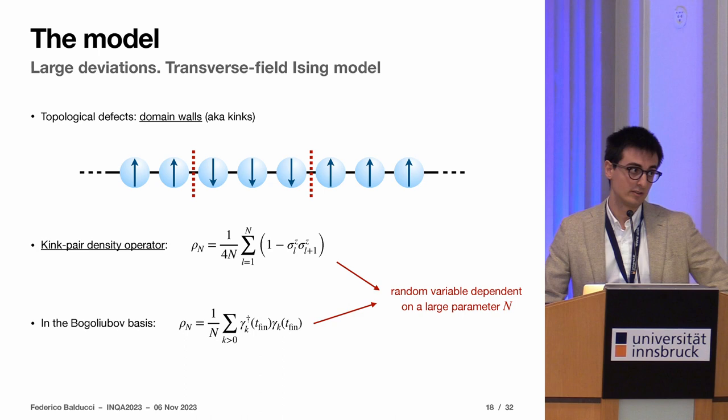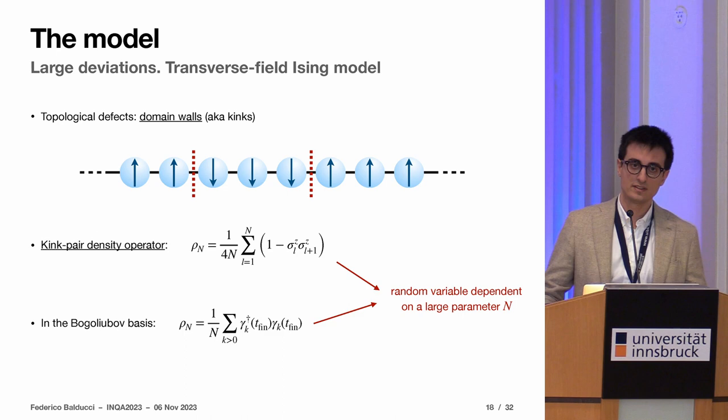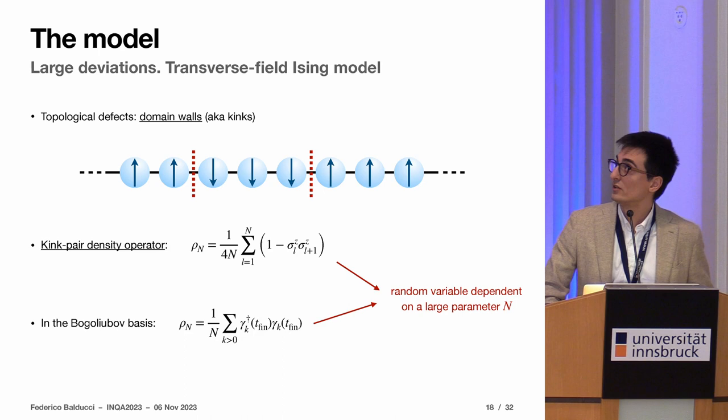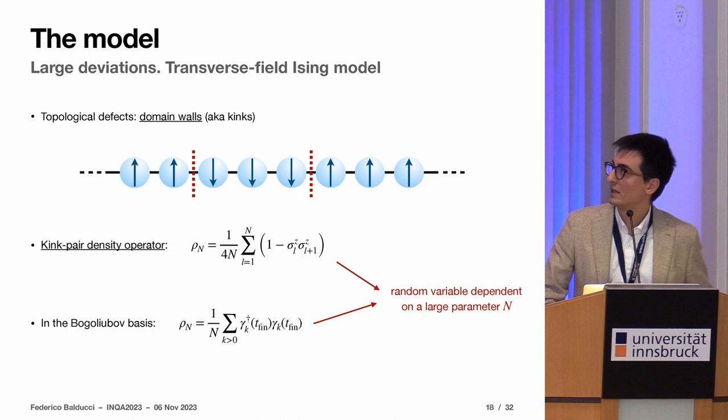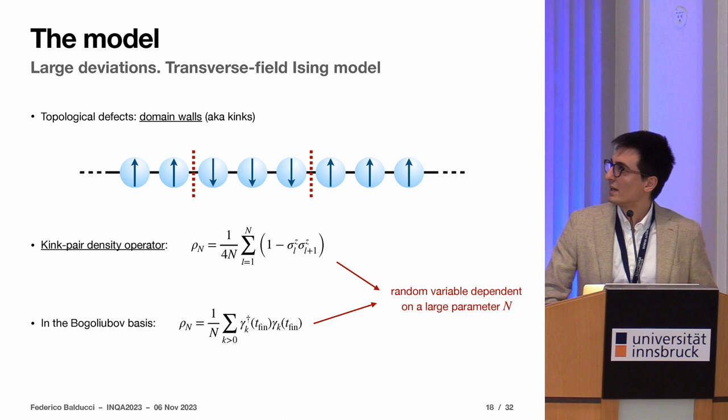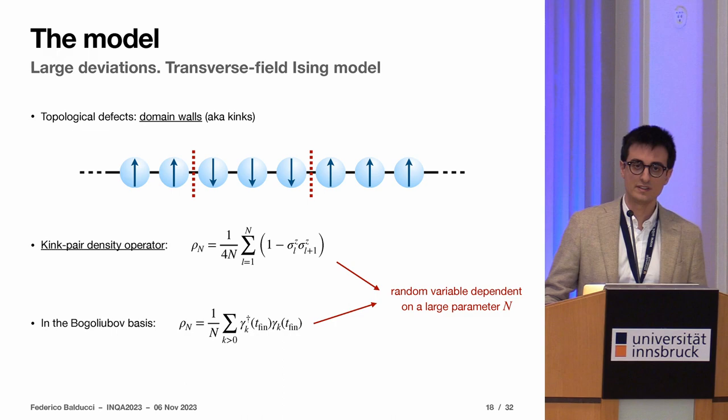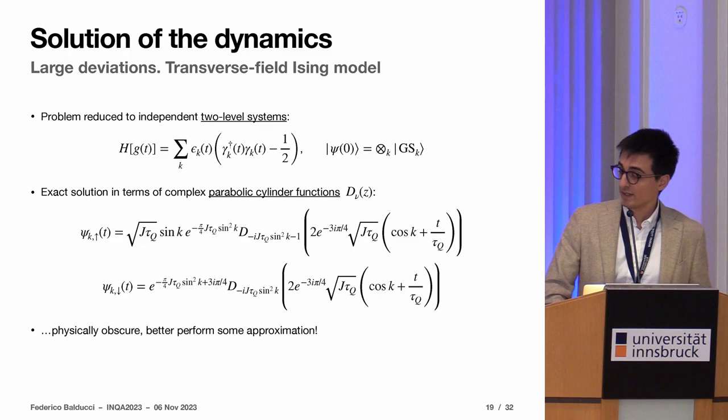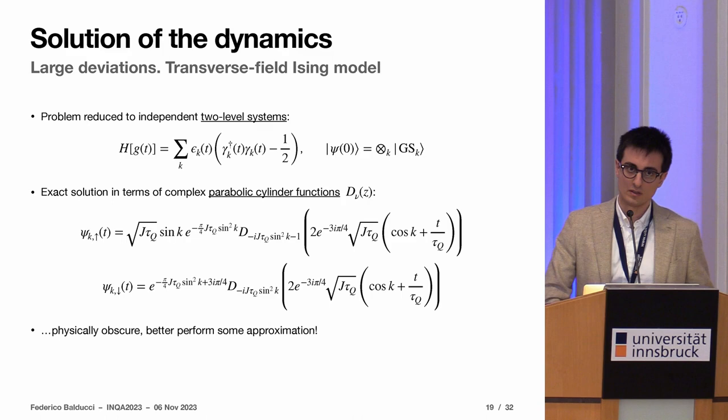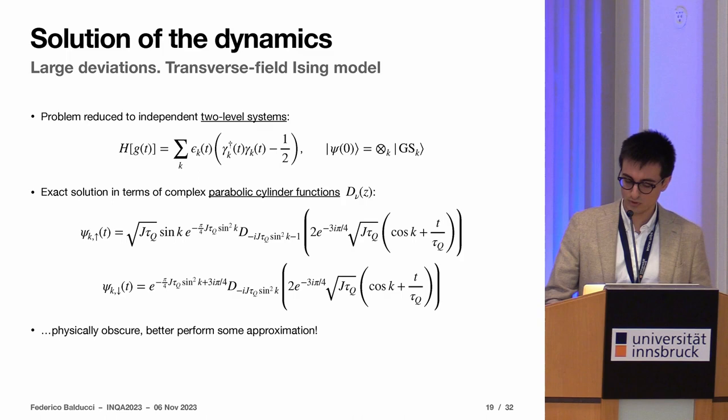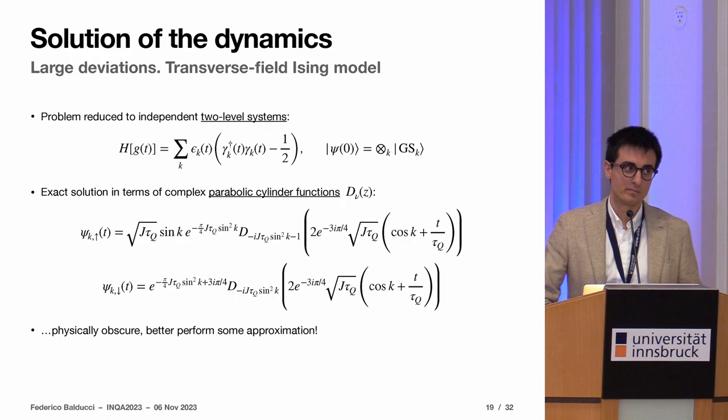How to characterize the final state reached by the dynamics? Since you would like to have the ground state in the end, the ground state is just a string of aligned spins, all the defects in this case are the domain walls. To count them one can introduce this operator here, which is basically counting the number of pairs of defects because they must be created in pairs by parity. This operator is diagonal in the Bogoliubov basis, so all the computations can be done exactly for this model. These are operators because we are talking about a quantum model, but once you take a snapshot of your final state, you get a random variable which depends on a large number n, which is the size of your system.